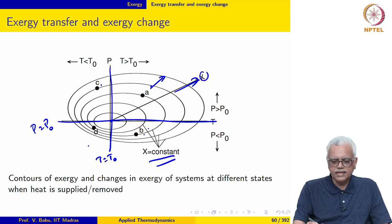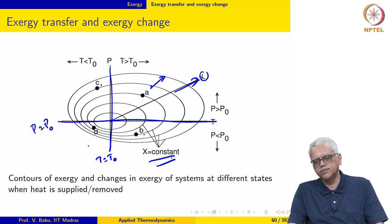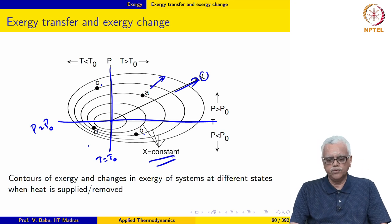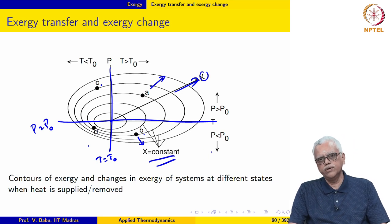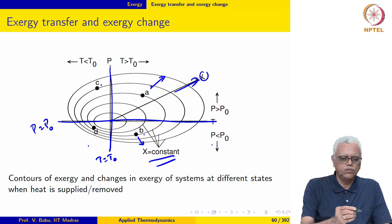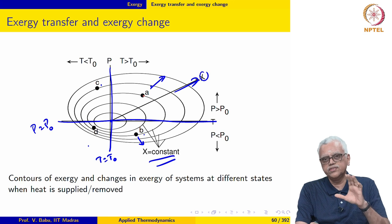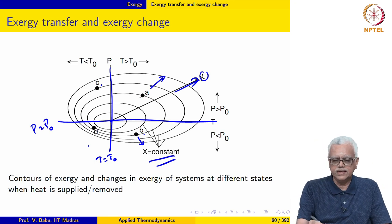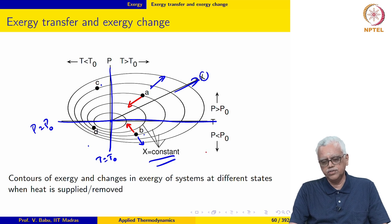Similarly, if I add heat to a system initially at state B, since its temperature is greater than T₀, the addition of heat causes its temperature to increase and it also moves radially away from the origin, so its exergy increases. Conversely, if heat is removed from this system or if the system supplies heat to some other device, its temperature will decrease and its exergy also decreases — it moves in the radially inward direction. The same is true for a system initially at a temperature greater than T₀.